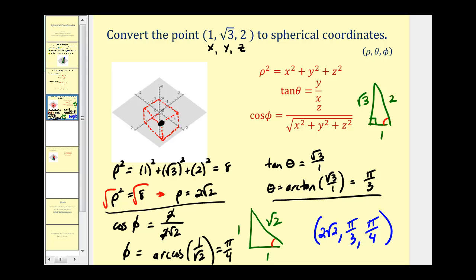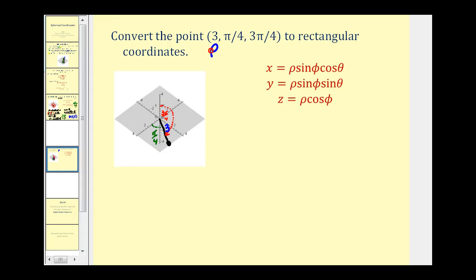Now let's look at another example where we convert from spherical coordinates to rectangular coordinates. We're given rho, theta, and phi as spherical coordinates and we want rectangular coordinates. Here are the equations to determine x, y, and z. X equals rho times sine phi times cosine theta, so it'll be three times sine of three pi over four times cosine of pi over four.